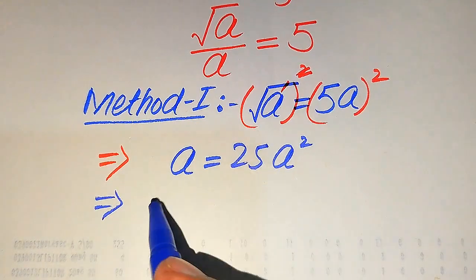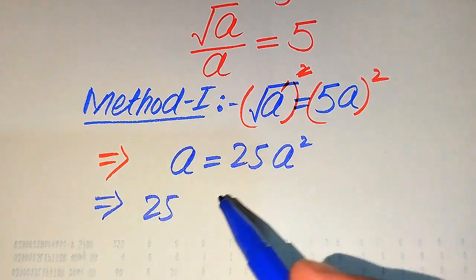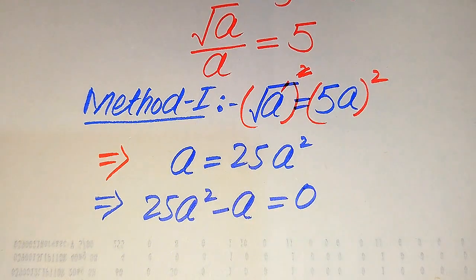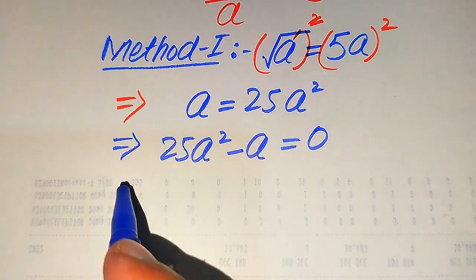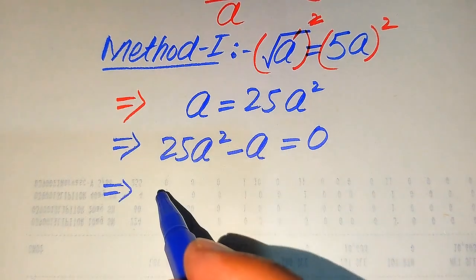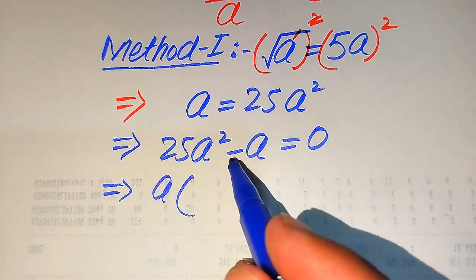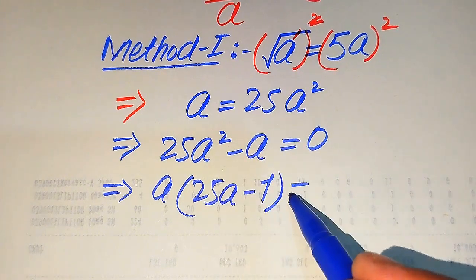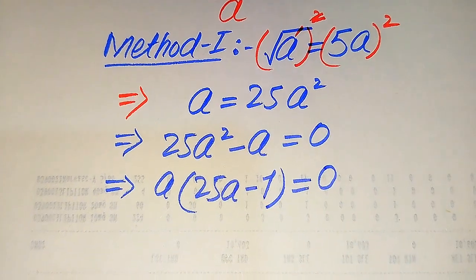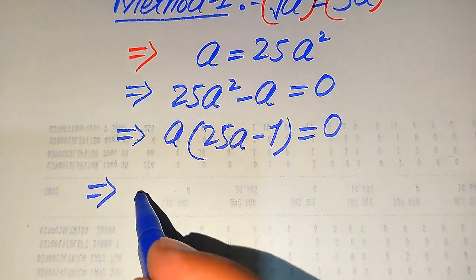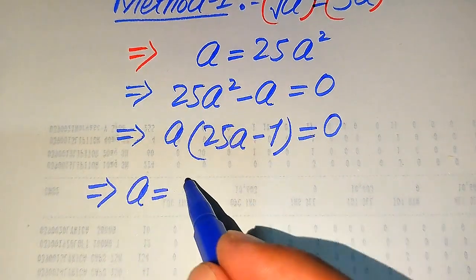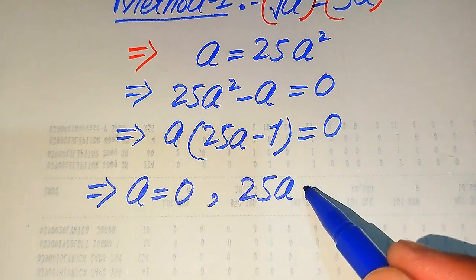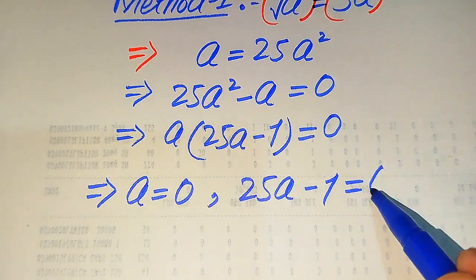In the next step we move the a to the right-hand side and it becomes 25a squared minus a equals 0. Both terms involve a, so we factor out a and get a times (25a minus 1) equals 0. We now split this into two cases: the first case is a equals 0, and the second case is 25a minus 1 equals 0.